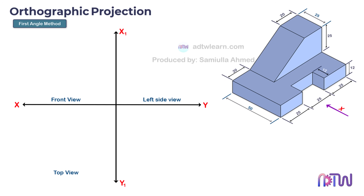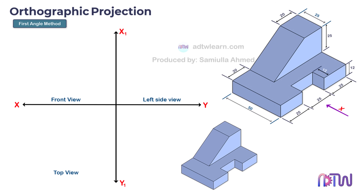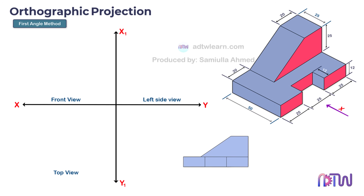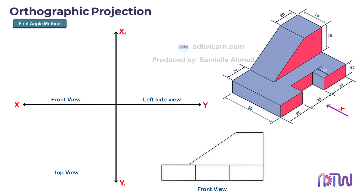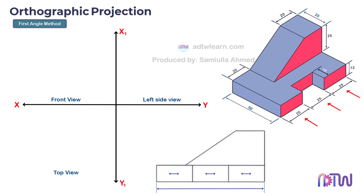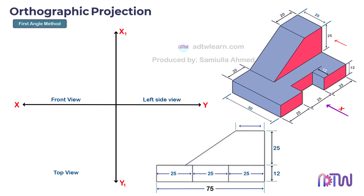Let's start drawing. First, we will draw the front view of the object. Since the direction of viewing is from this side, suppose you are standing here and looking at the object — this is how it will look. Only this part of the object is visible, so this is our front view, which we need to draw above the XY line. For dimensions: the total length is made up of three sections of 25 millimeters, equal to 75 millimeters. This height is 12 millimeters, the next height is 25 millimeters, and this width is 20 millimeters.